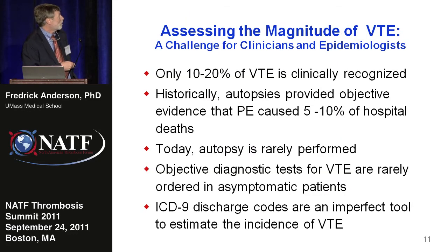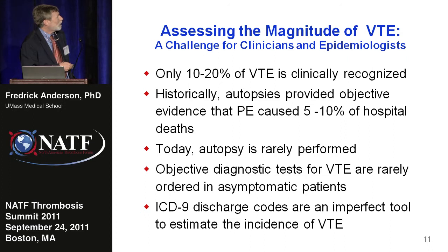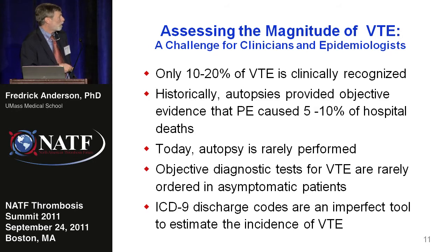We have a big challenge. Epidemiologists have a challenge in measuring this disease — is it increasing, decreasing, who gets it? Clinicians have a challenge in determining which patients are at risk. Only about 10 to 20% of VTE is clinically recognized. Historically, autopsies provided the objective evidence that PE caused between 5 and 10% of deaths in a hospital. Today, autopsy is rarely performed and we've lost that yardstick. Objective diagnostic tests for VTE are rarely ordered in asymptomatic patients, so we really don't know much about asymptomatic patients from routine objective testing outside of clinical trials.